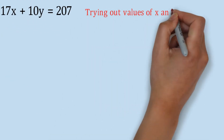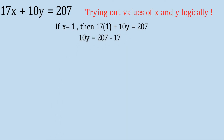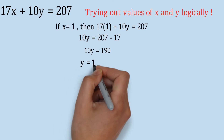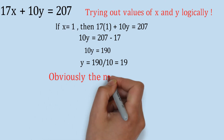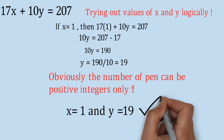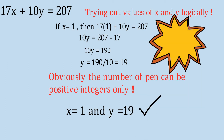We have to try out values of x and y logically one by one. If x equals 1, then 17 plus 10y equals 207, so 10y equals 190, giving y equals 19. This is exactly a positive integer - a whole number - and the number of pens can only be positive integers. So we got one combination: x equals 1, y equals 19. Let us now look for a shortcut strategy because doing this one by one will take a lot of time. We need to figure out a pattern.